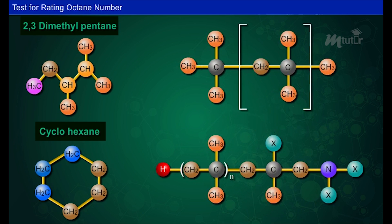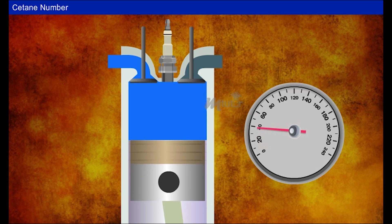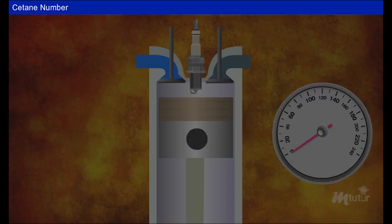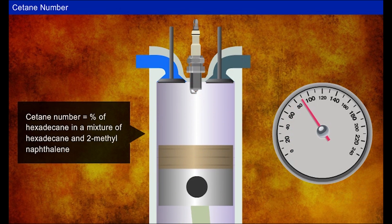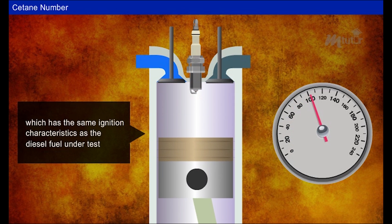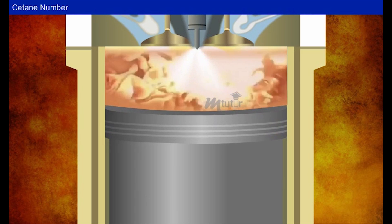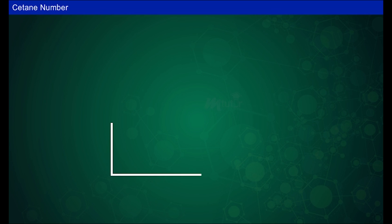If the alkane is more branched, the octane number will be higher. Cyclic compounds have higher octane number than straight chain compounds. Cetane number is a relative measure of the time delay between the injection of fuel into the chamber and the start of combustion. It is the percentage of hexadecane in a mixture of hexadecane and 2-methyl naphthalene which has the same ignition characteristics as the diesel fuel under test. The ignition quality of a fuel can be deduced through its cetane number. A fuel with good ignition quality has a high cetane number, where the ignition delay period between the start of fuel injection and the onset of auto-ignition is short.